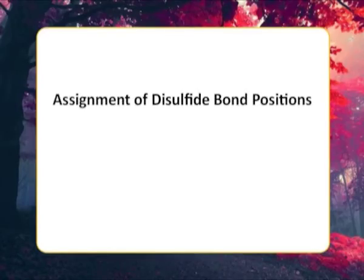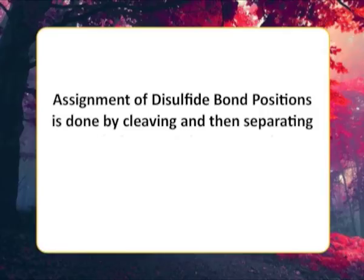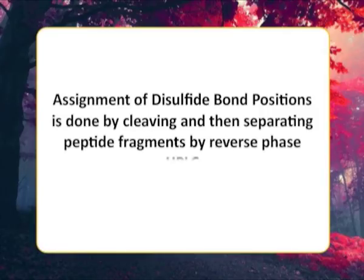The final step in an amino acid sequence analysis is to determine the positions, if any, of the disulfide bonds. This is done by cleaving and then separating peptide fragments by reverse phase chromatography.